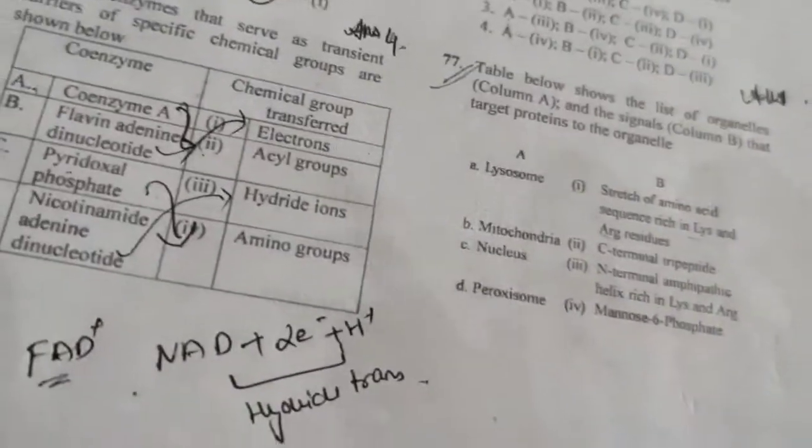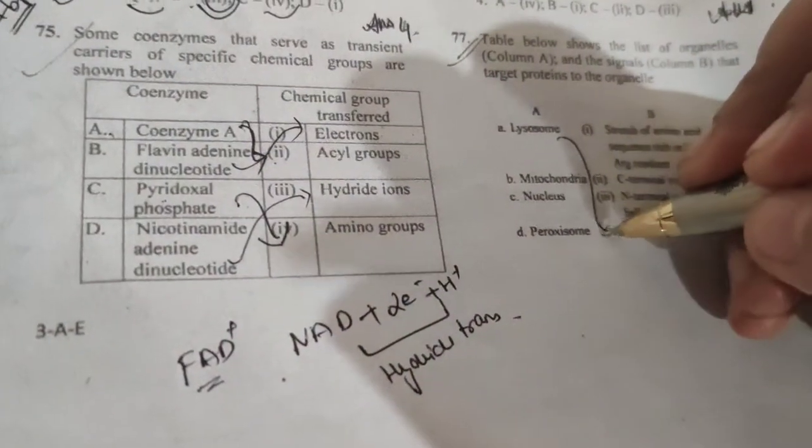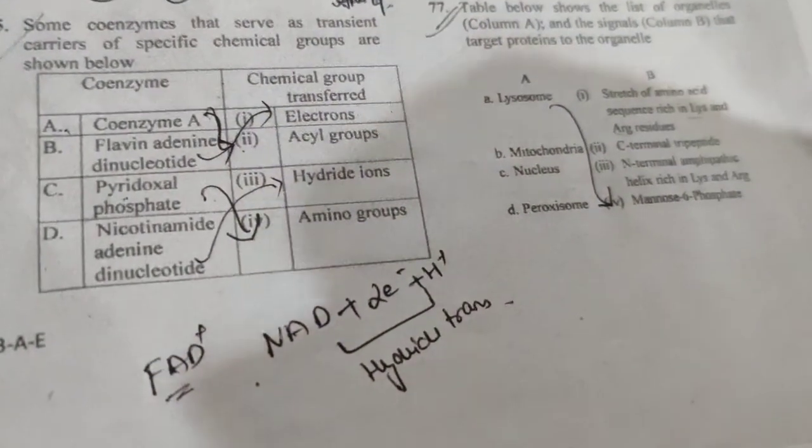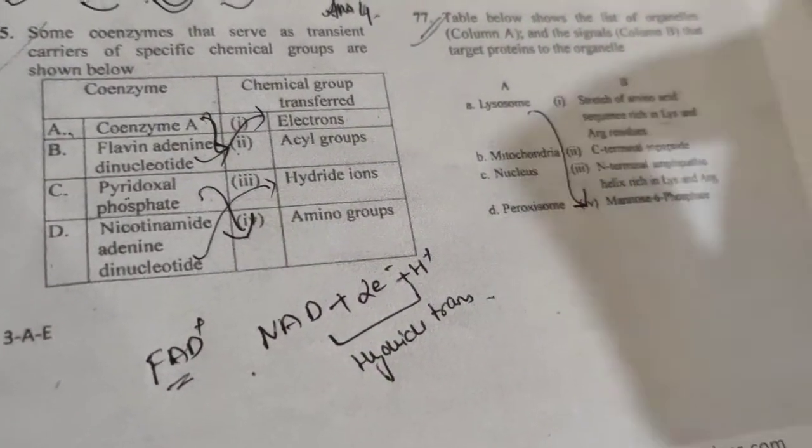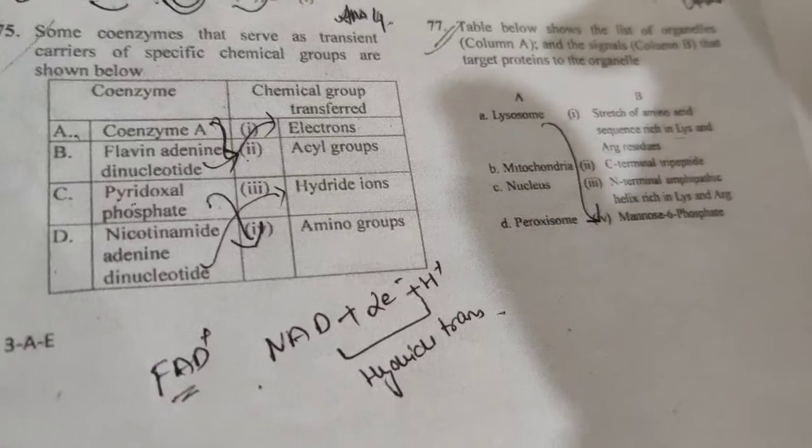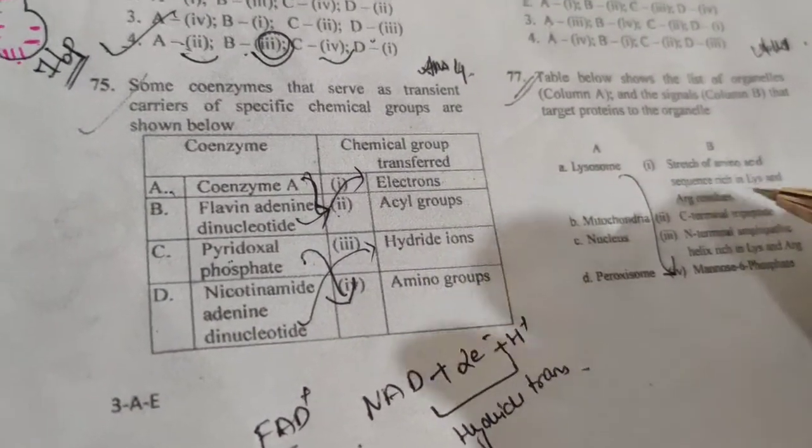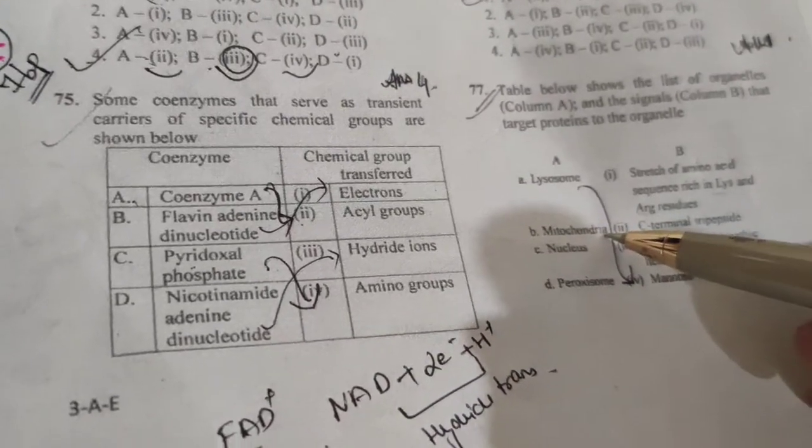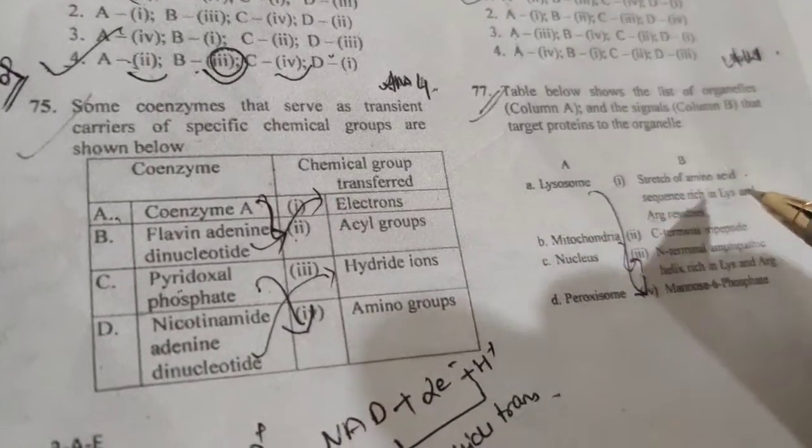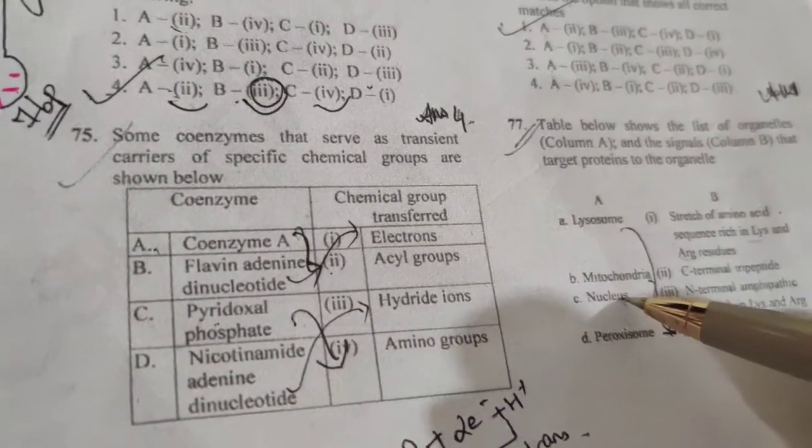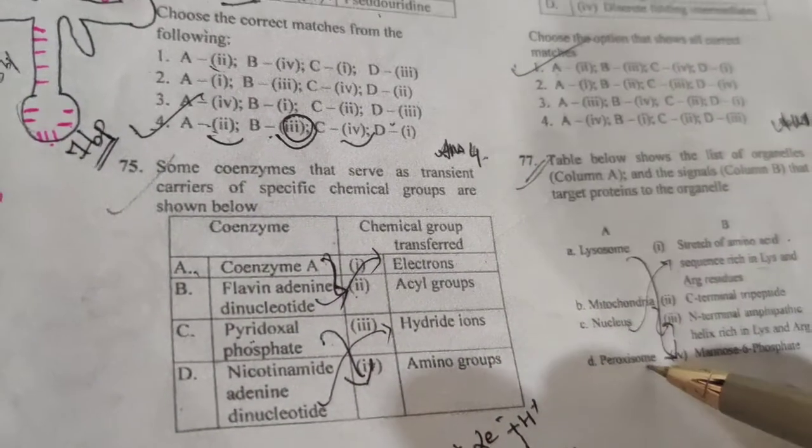This is Lysosome, so Lysosome's target protein is Mannose 6-phosphate. This you all have studied, this is directly we have to do this. Mitochondria is called Amphipathic Helix, Lysine and Arginine is called B. Nucleus has amino acid sequence which is rich in Lysine and Arginine, C is called C-terminal tripeptide.